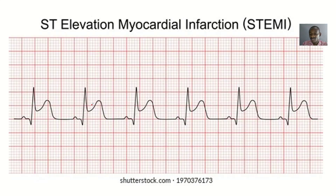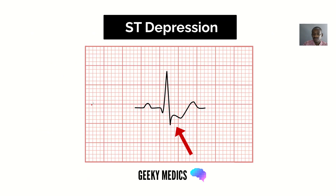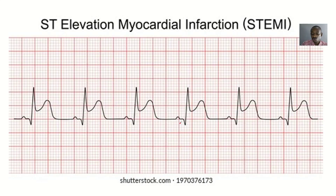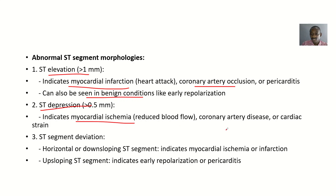If the ST segment is depressed — meaning instead of being normal it is inverted — it indicates myocardial ischemia, which is reduced blood flow to the heart muscles. This could also indicate coronary artery disease or cardiac strain.